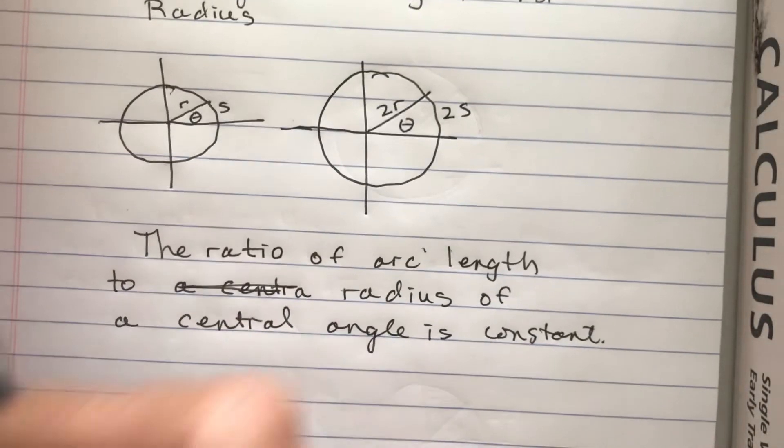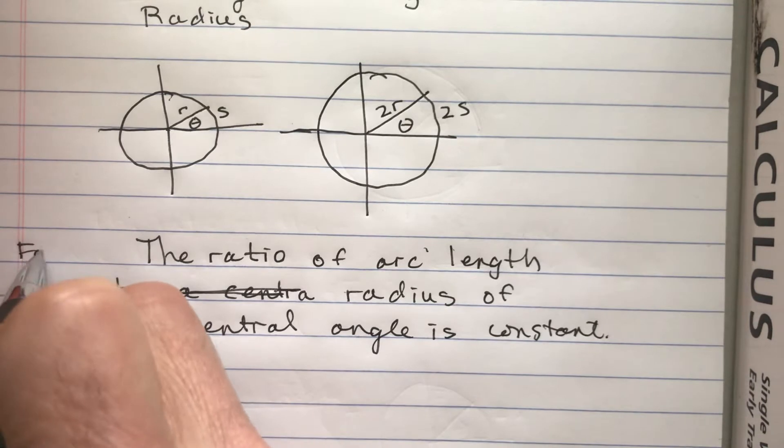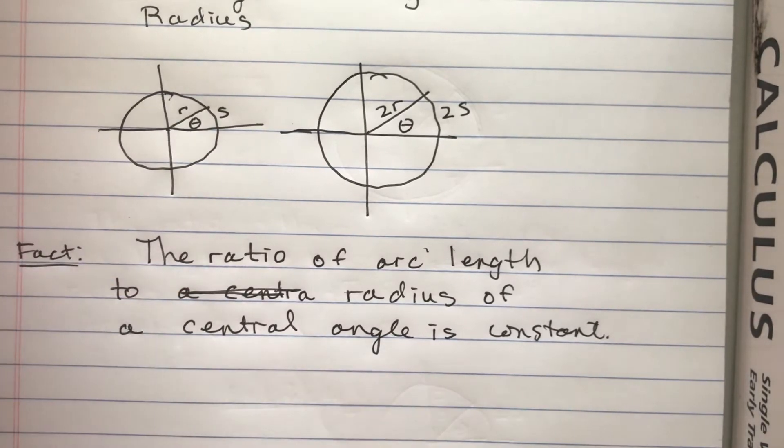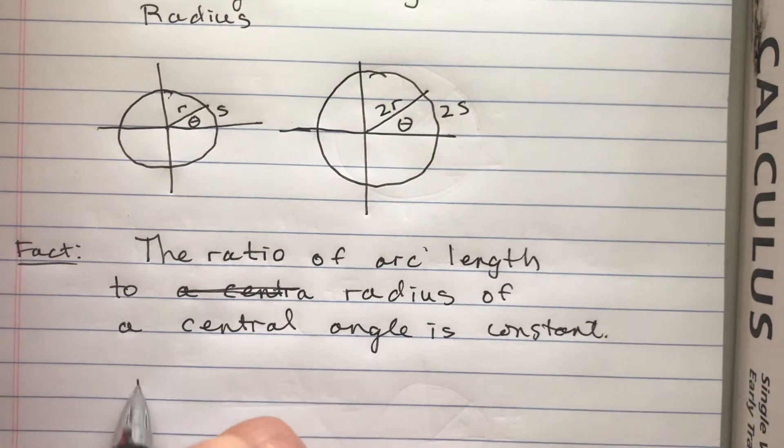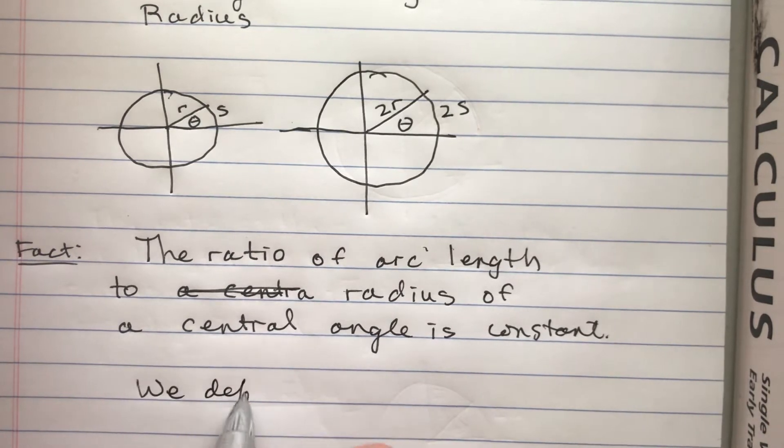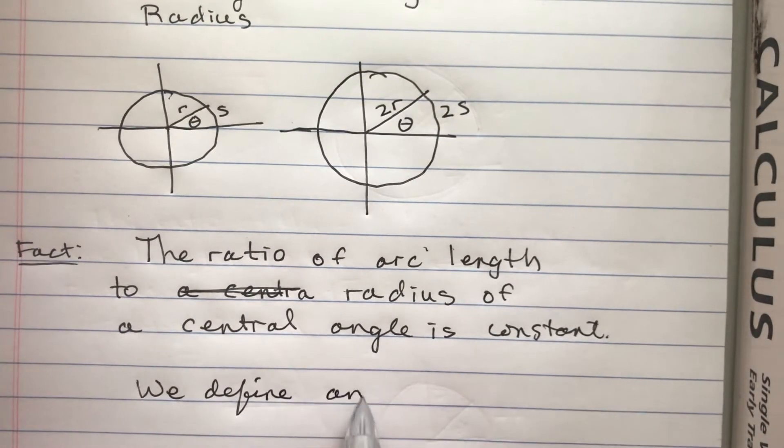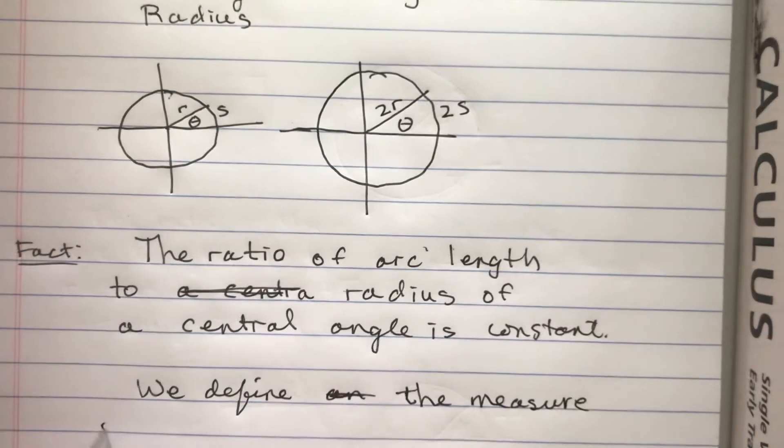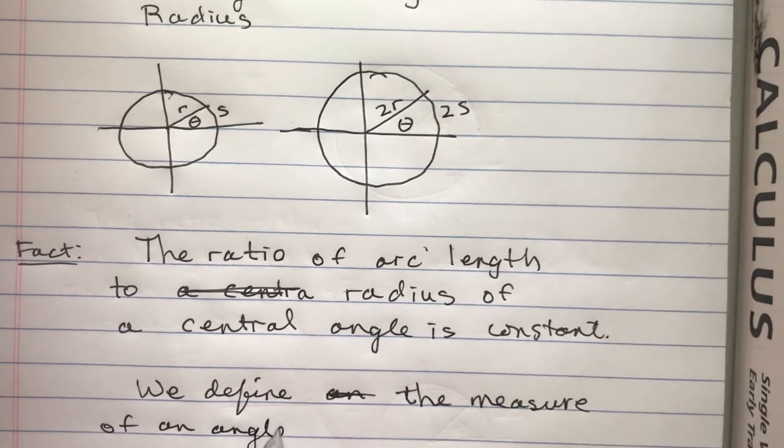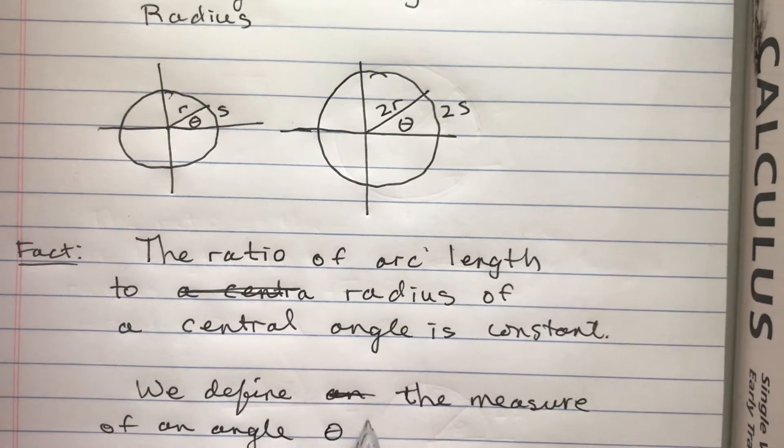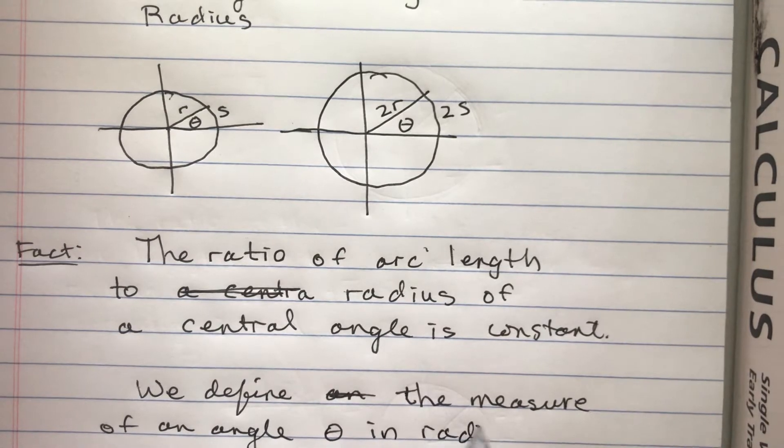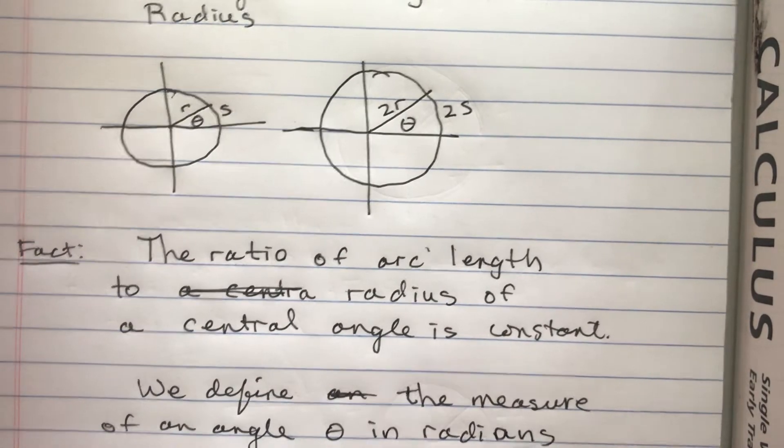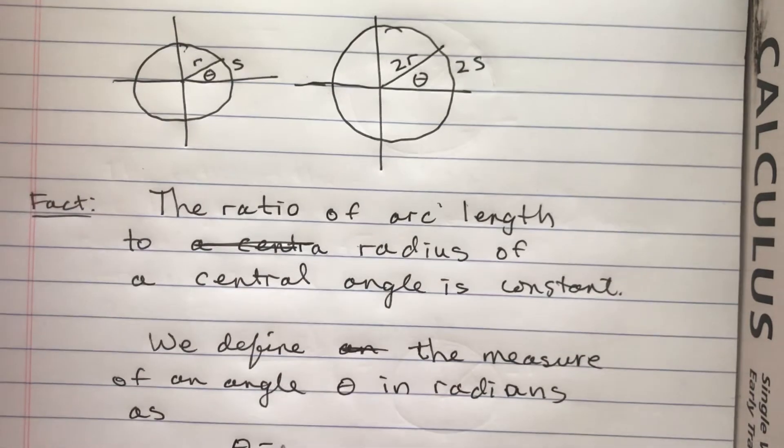So that's a fact. We define the measure of an angle theta in radians as theta equals S divided by R.